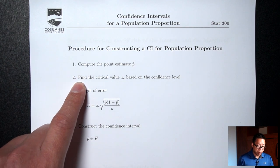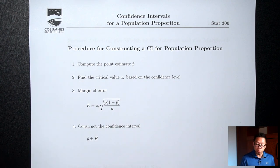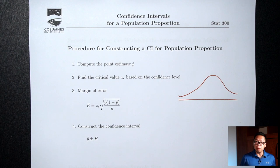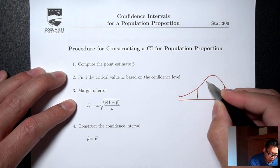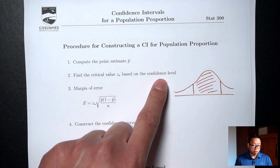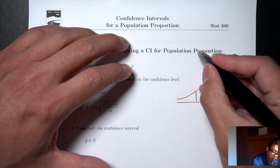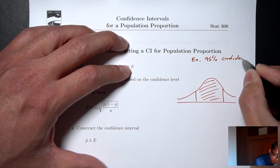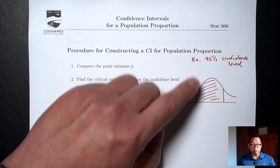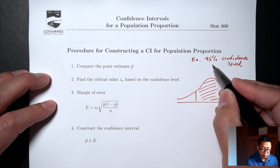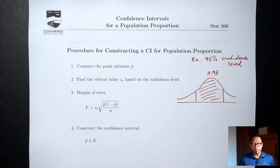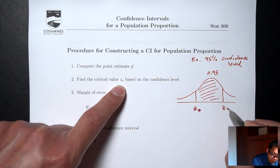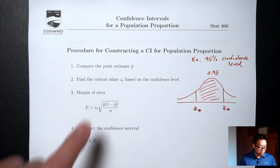Step two: find a critical value z-star based on the confidence level. For this step, we're going to be drawing the normal distribution picture. The confidence level refers to the area in the middle — we're going to be shading in the middle for all questions today. In the article, the confidence level was 95%, which as a decimal is 0.95. Z-star is the special z that has an area of 0.95 in the middle. That's the critical value.